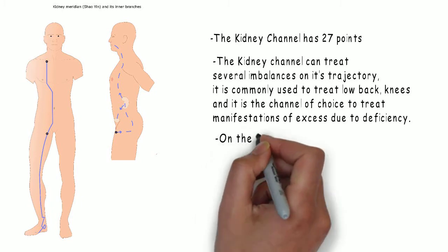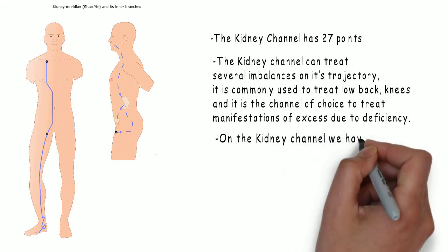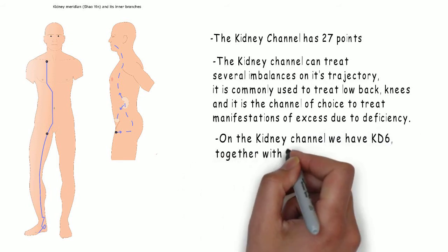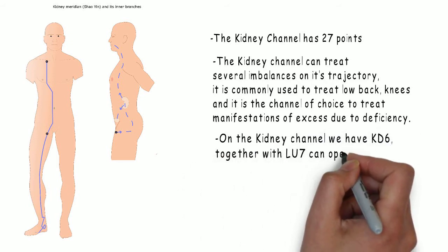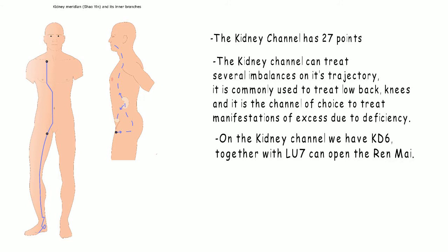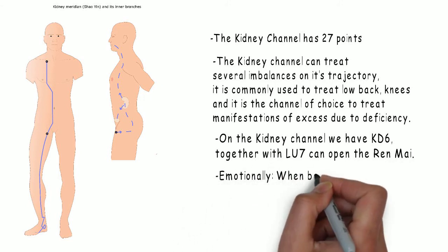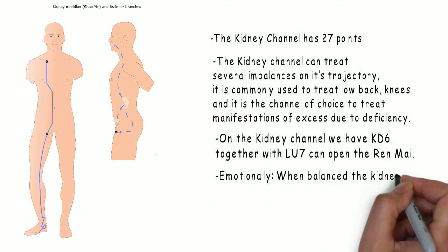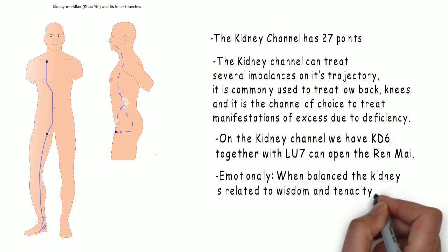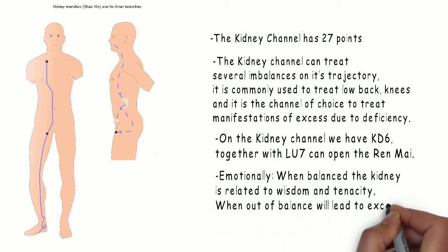On the kidney channel we have kidney six, which together with lung seven can open the Ren channel. Emotionally, when balanced, the kidney is related to wisdom and tenacity. When out of balance, it will lead to excessive fear.